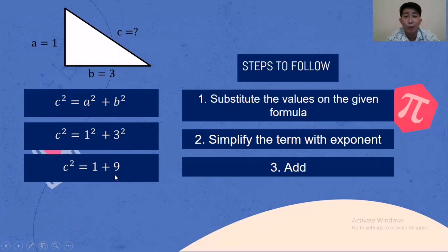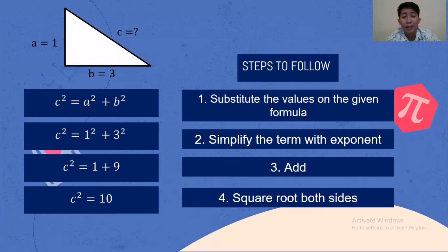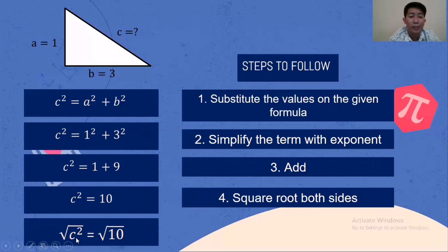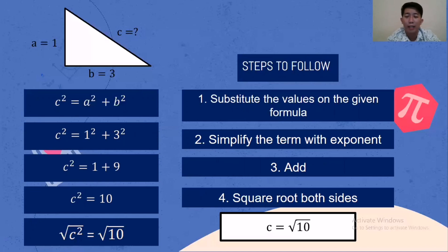Next, we add: 1 plus 9, that is 10. Then square root both sides. The square root of C squared equals the square root of 10. So the final answer is C is equal to the square root of 10.